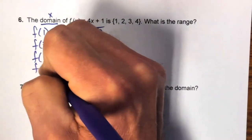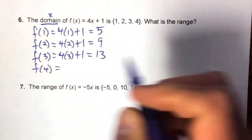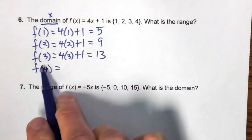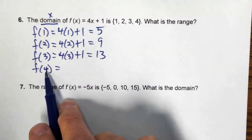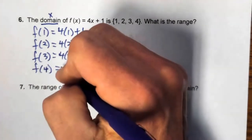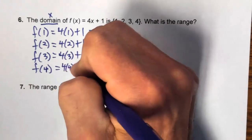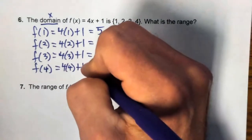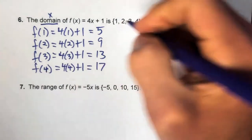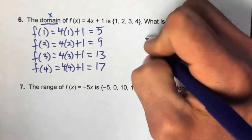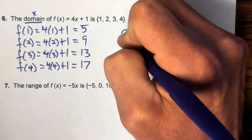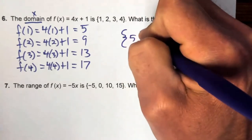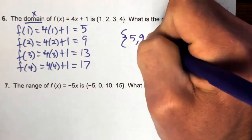Continuing: f(4) = 4(4) + 1 = 16 + 1 = 17. So in set notation, the range is {5, 9, 13, 17}.